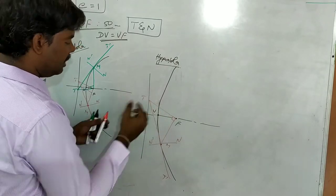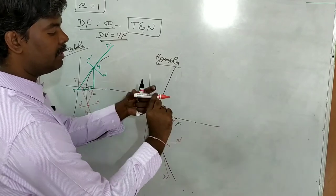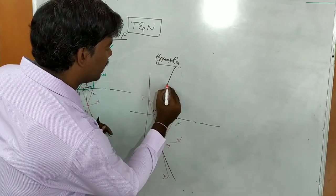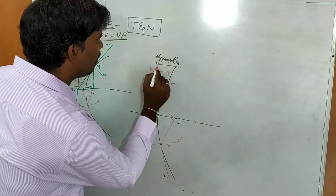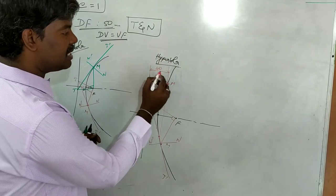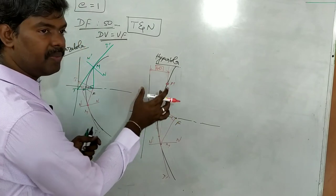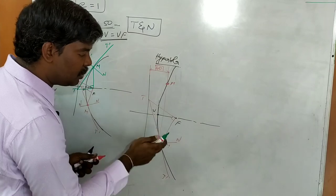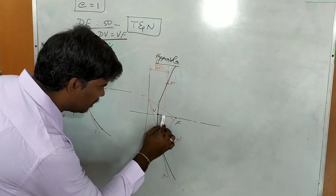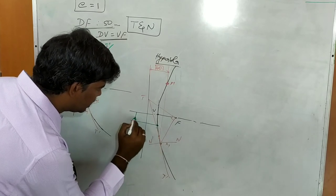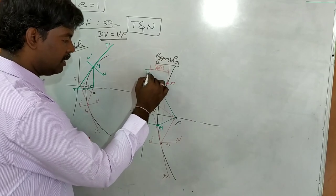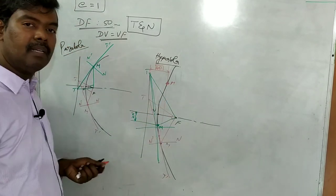For the second case — from directrix distance: for example, a distance of 40 mm from the directrix means the horizontal distance from the directrix to the point on the curve is 40 mm. Where that measurement coincides with the curve, that is point M. The problem will specify top side or bottom side. For the third case — from axis distance: for example, 20 mm from the axis means the vertical distance from the axis to the point on the curve is 20 mm. That intersection point is M. Then apply the same procedure: join F-M, drop perpendicular from F to get T, draw tangent T-T-dash, and normal N-N-dash through M.